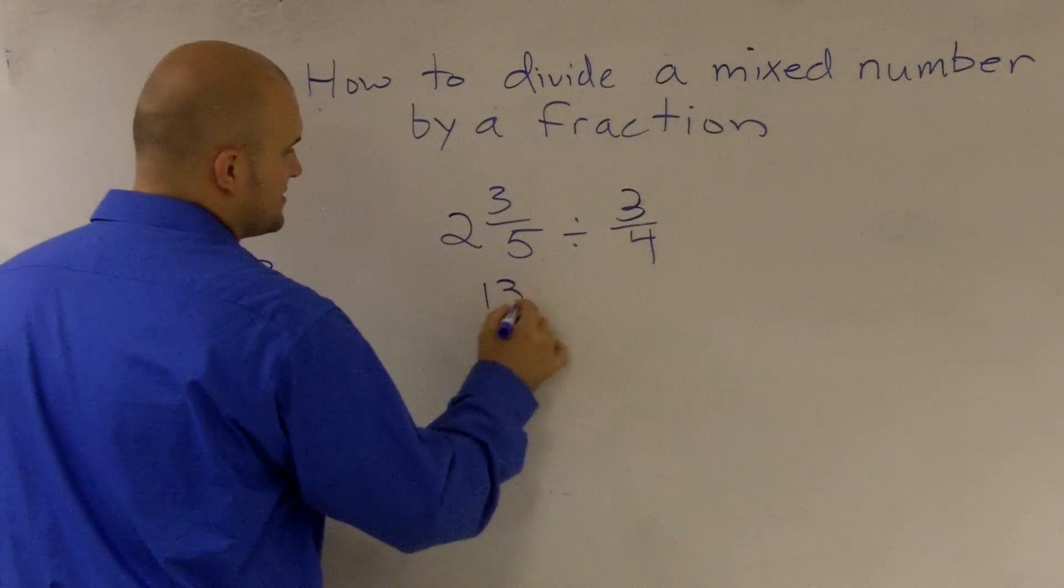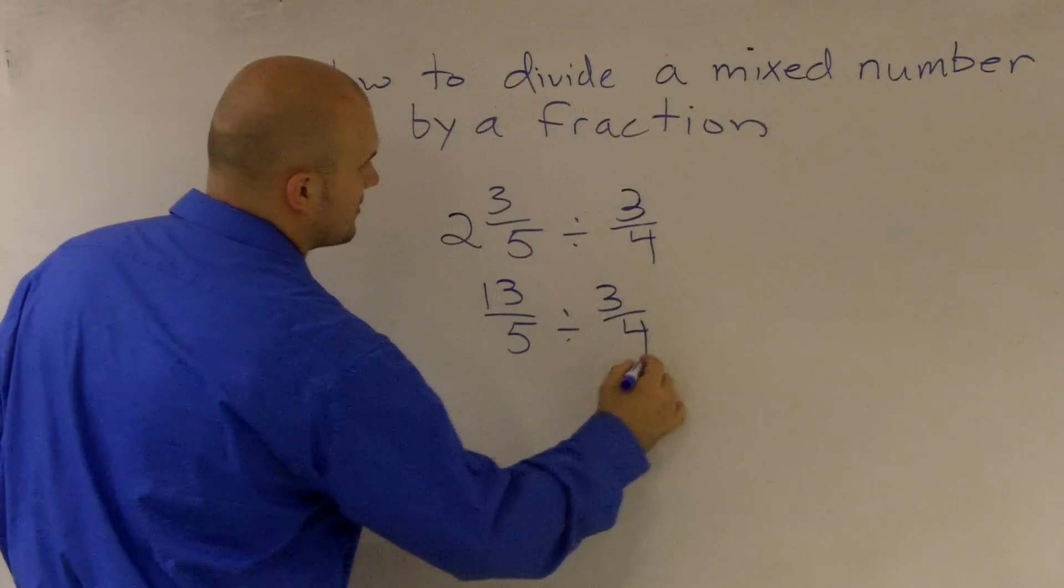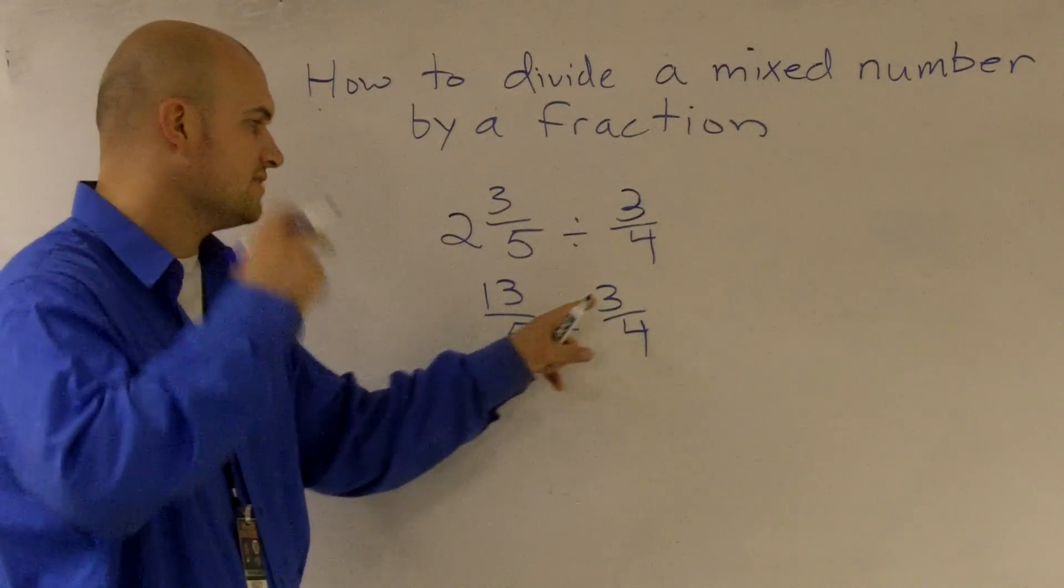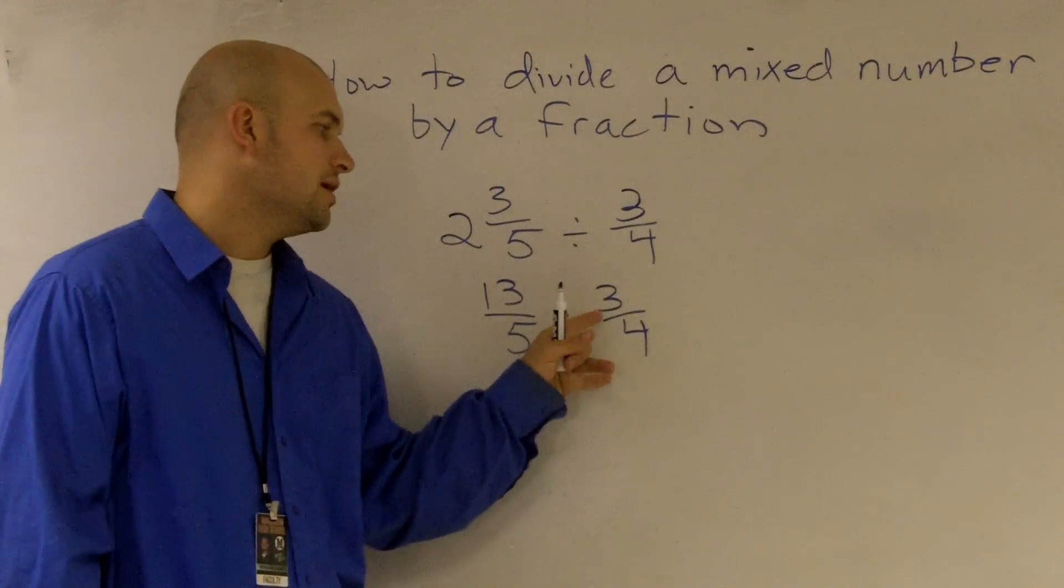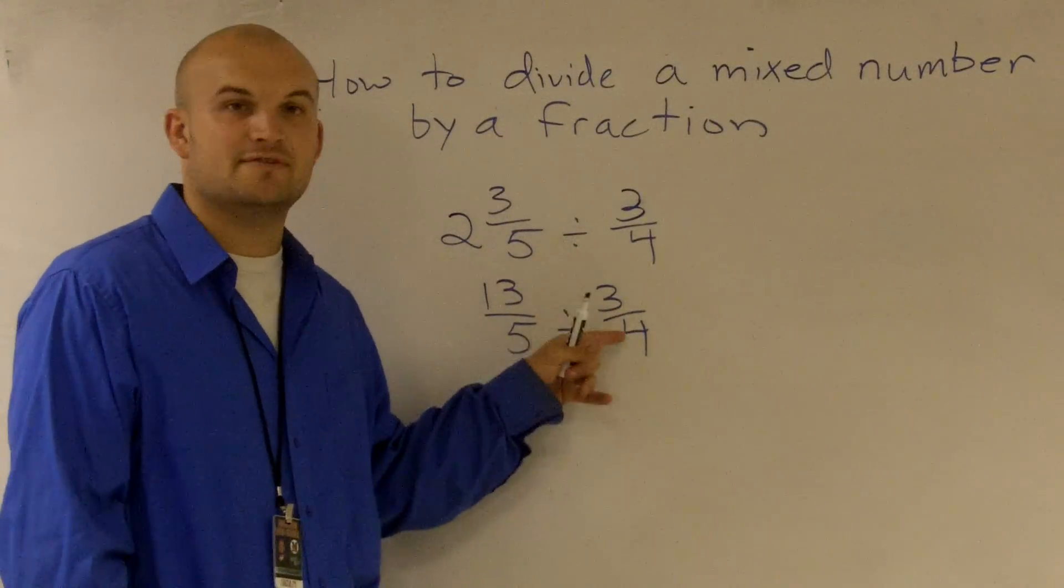So I have 13 fifths divided by 3 fourths. Another shortcut we can use when dividing fractions is to take the second term and flip it to give you its reciprocal.